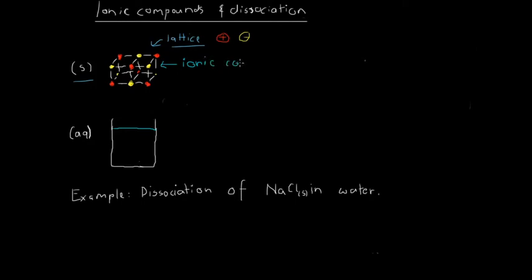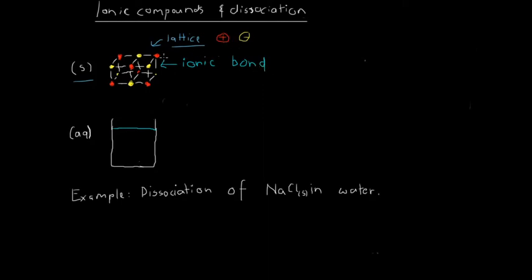Because we've got this red positive ion connected to this yellow negative ion in this lattice structure, the white line represents an ionic bond. That's basically just a result of their opposing charge — just like any setup related to electricity, we've got a positive charge and a negative charge, and we know they attract each other. So a positive ion and a negative ion attract each other because of their opposing charge and form an ionic bond.